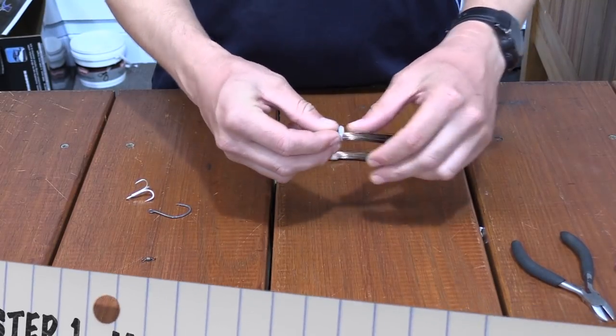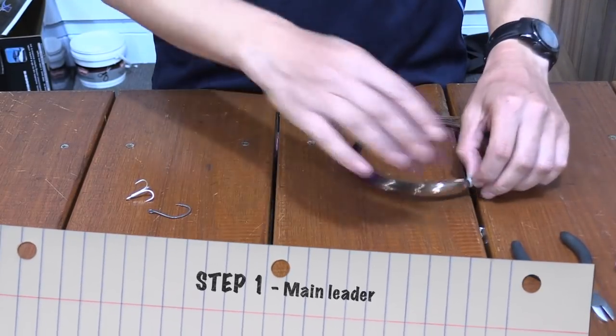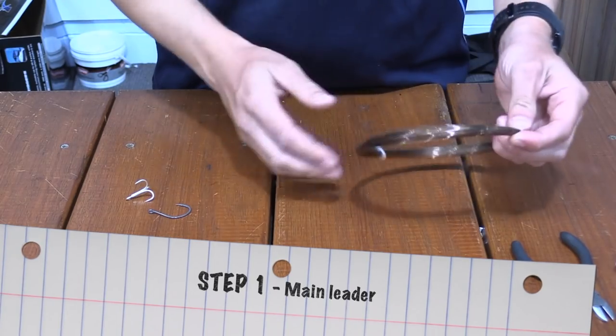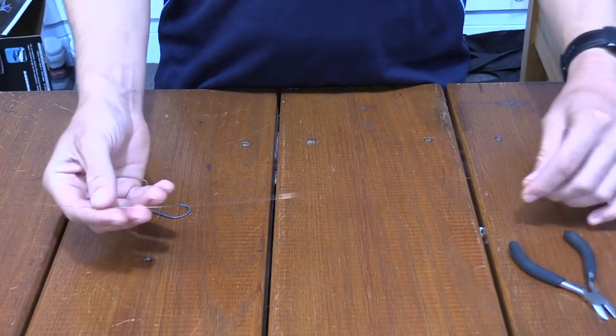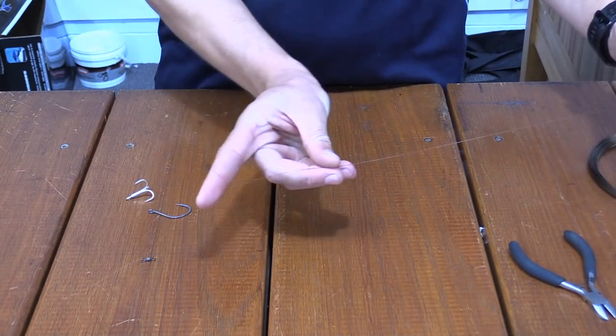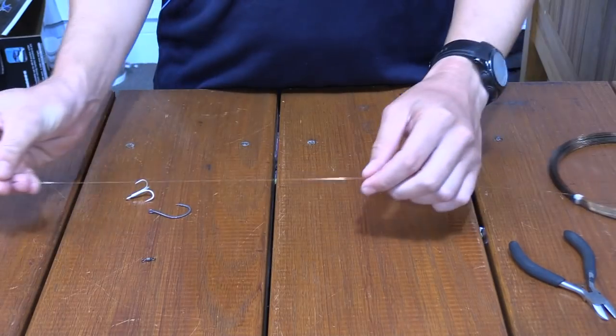For the start you'll need your single strand wire. I use about a foot length, say 30 centimeters roughly for the first join, so you'll need a bit of excess as well for doing your haywire twists at each end.